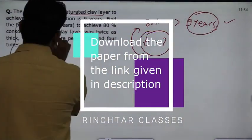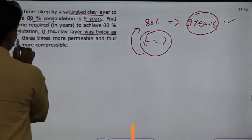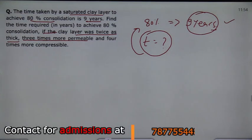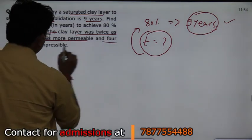What is the condition? If the clay layer was twice as thick, the permeability you have done three times, and four times more compressible.